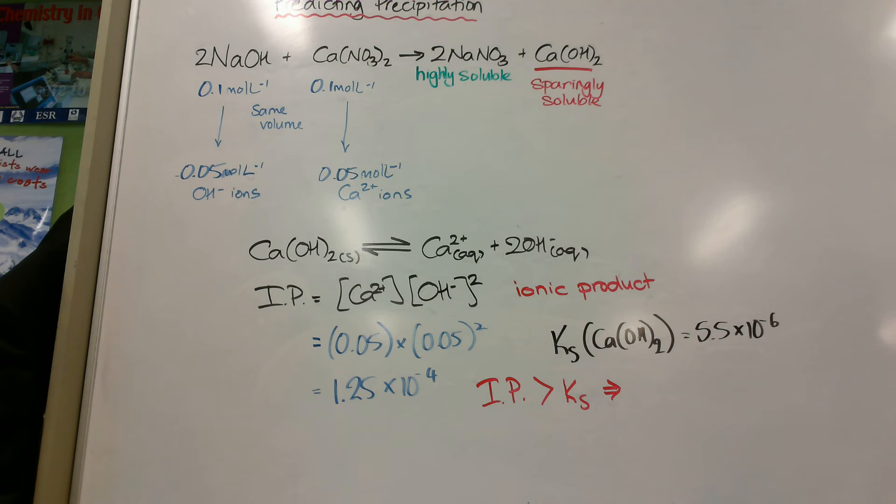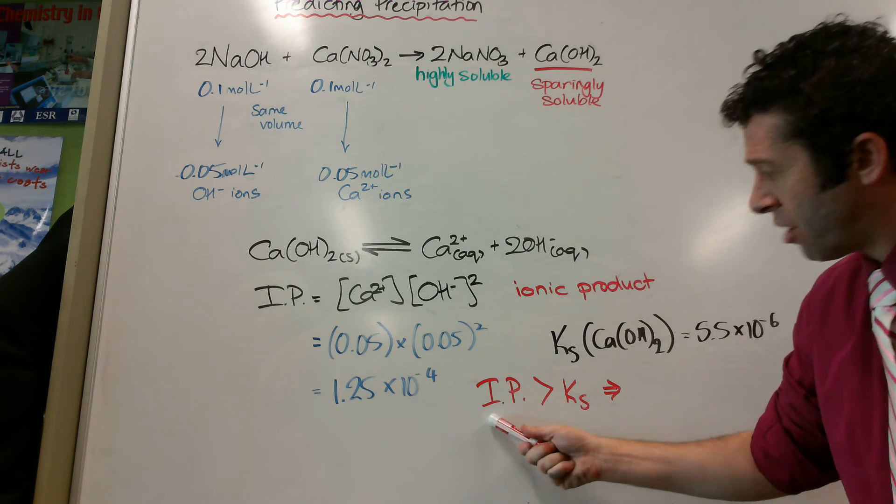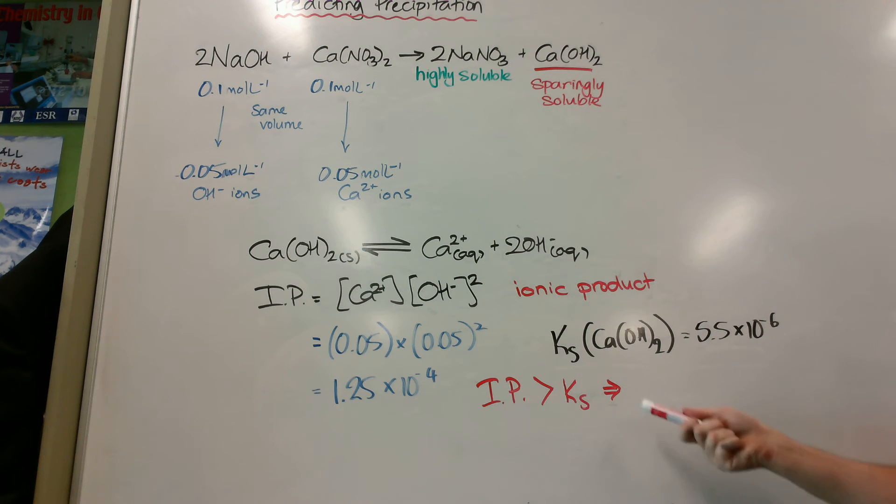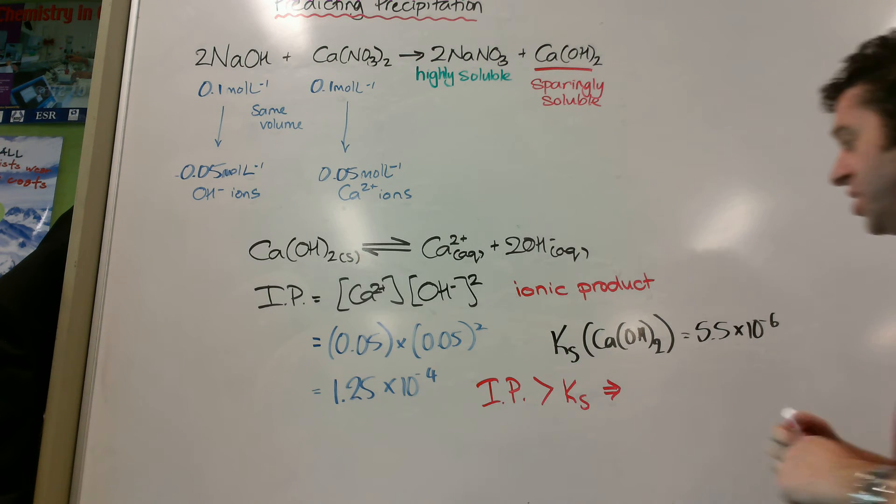What did we observe when we mixed the two chemicals together? A precipitate. So we could make an inference that if the ionic product is bigger than KS, what's going to occur? Precipitation.